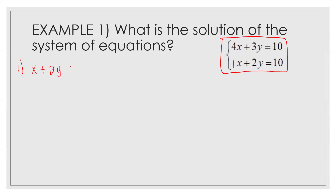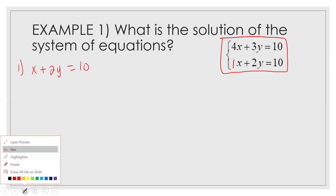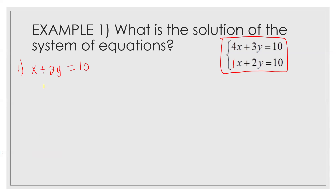So I have x plus 2y equals 10. My goal is to get x by itself — that's what isolating means. I need to move the 2y away from it, so I subtract 2y, which leads me to x equals 10 minus 2y. That's what it means to isolate.